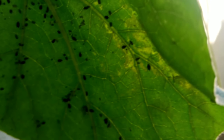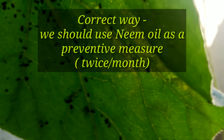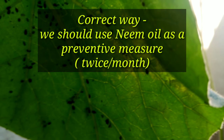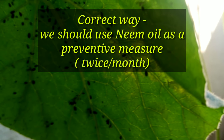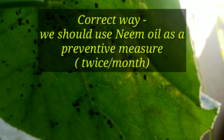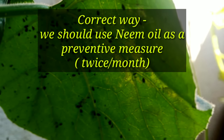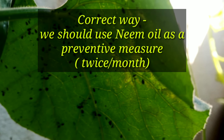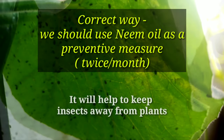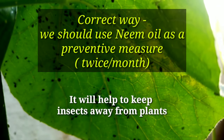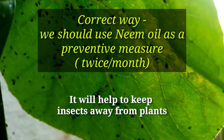So we should always try to use neem oil as a preventive measure and apply it at least twice a month on our plants, so that insects and fungus will not start living on them.